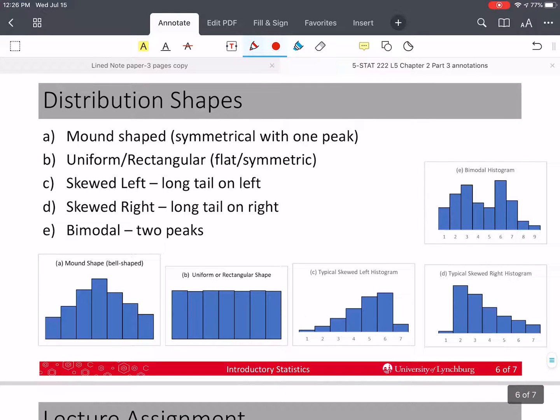Now that we've done that, let's talk about the different shapes that we have here, the distribution shapes. So the first, your book calls it mound shape. I call this, really, it's bell shaped.